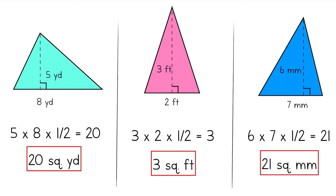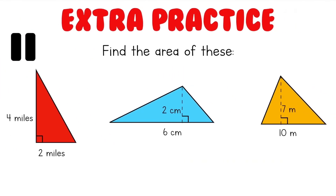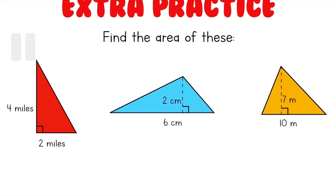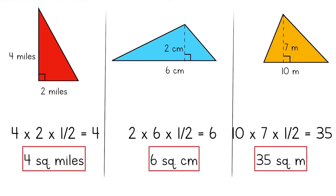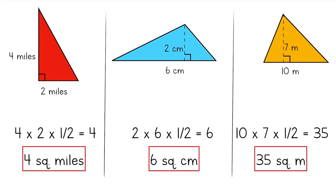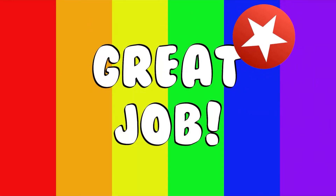I'm sure you did amazing with the area of these triangles. Let's practice a few more just to make sure we've mastered this crazy calculation. Can you find the area of these? Remember to pause. Here are the answers. I multiplied the base, the height, and one half together to get my value, and then labeled using the proper units. Remember, the red triangle is a right triangle because it has a right angle in it, and that means the height of this triangle is also one of the sides. Did you get a few more of these triangles correct? Great job! Here's a red star for your stellar work.